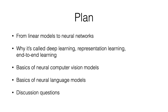I want to explain why there are weird names for these things: why is it called deep learning, why is it sometimes called representation learning, why is it sometimes called end-to-end learning? I'm hoping to give you the intuition behind these names. Then we'll go into the basics of neural computer vision models — a hugely popular and successful application where we've done some amazing things advancing computers' ability to understand visual input.